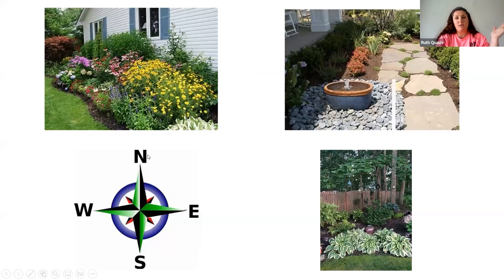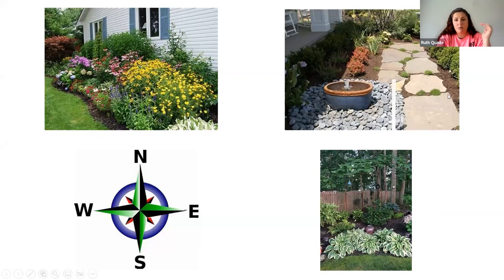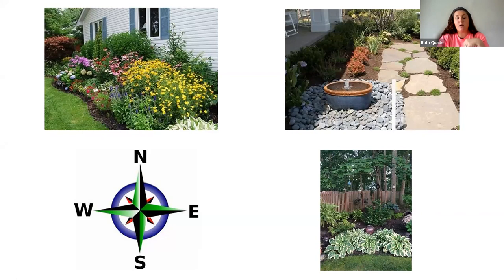Knowing where north, south, east, and west are will help you a lot in determining where your sun gardens and half-shade gardens are. When a plant says it can take partial sun, this is a good place to put those plants. When they say full shade or late afternoon sun, that tells you exactly where they should go. Read the tags before planting.